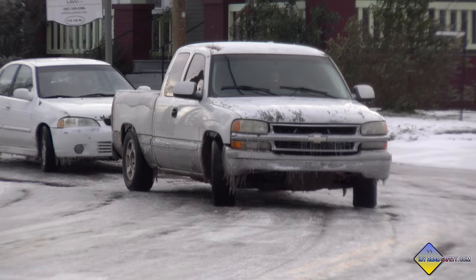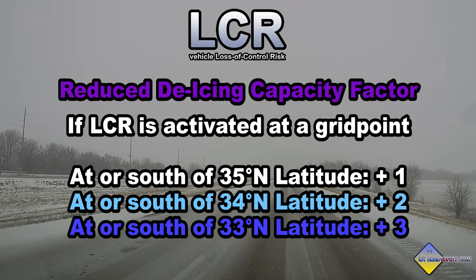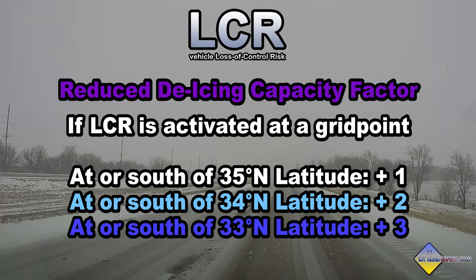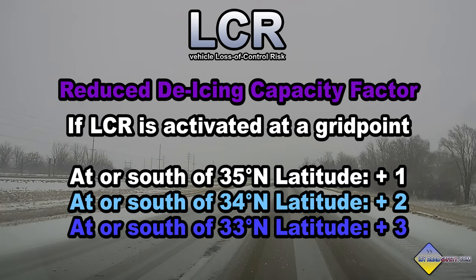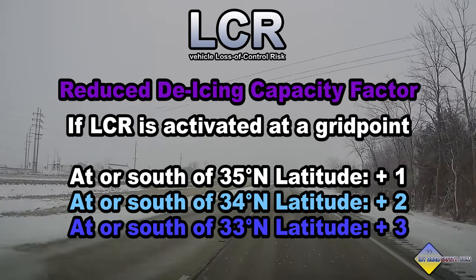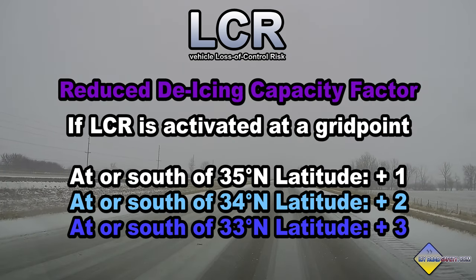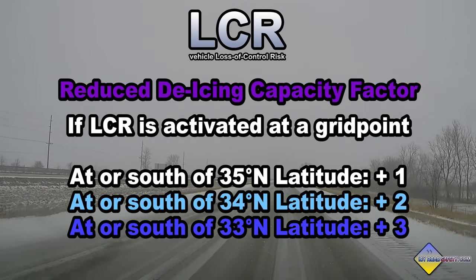If you're familiar with my videos, you know I spend a lot of time covering southern United States winter storms and you've seen how bad those can be. The LCR script handles this factor using the latitude of the location's coordinates. At locations at or south of 35° latitude, LCR is increased by 1. At or south of 34° latitude, LCR is increased by 2. At or south of 33° latitude — covering mainly the southern two-thirds of the Gulf Coast states — LCR is increased by 3. Refinements for mountainous regions with better de-icing capacity, like northern Georgia or parts of Arizona and New Mexico, are in progress but not yet active.